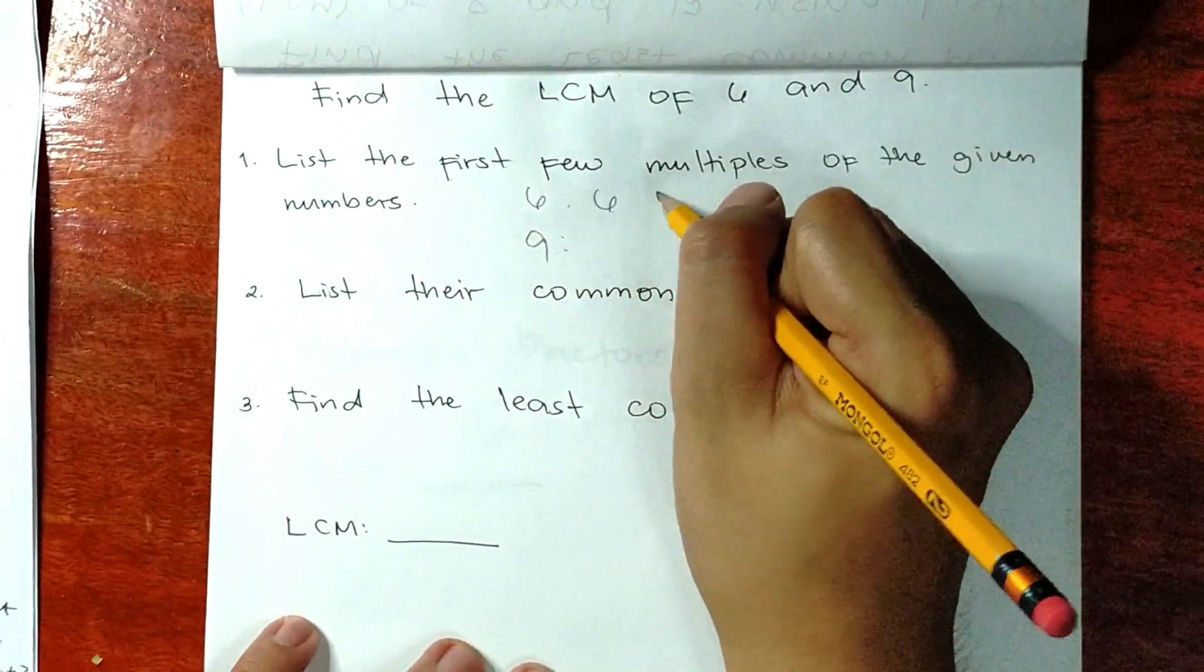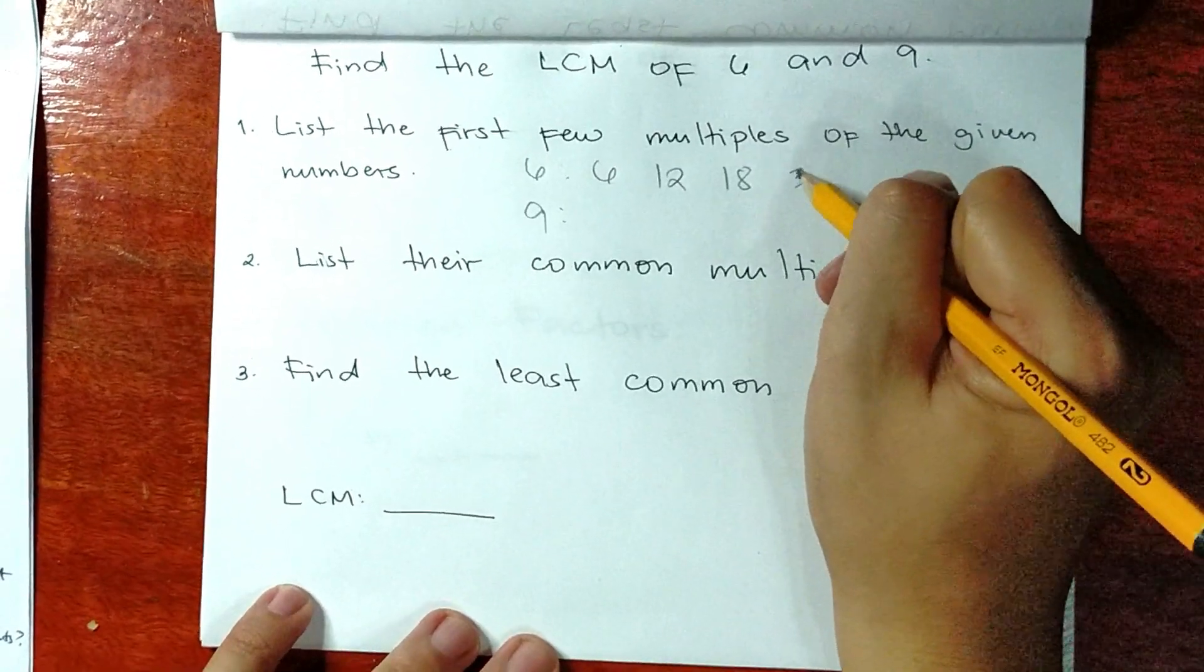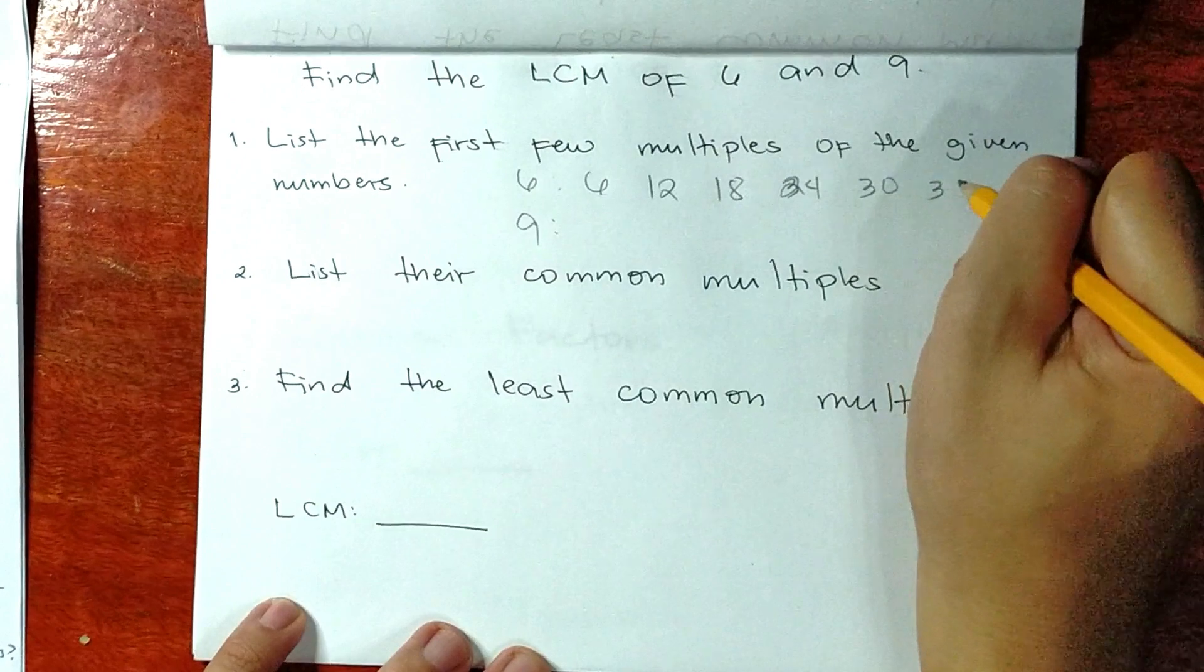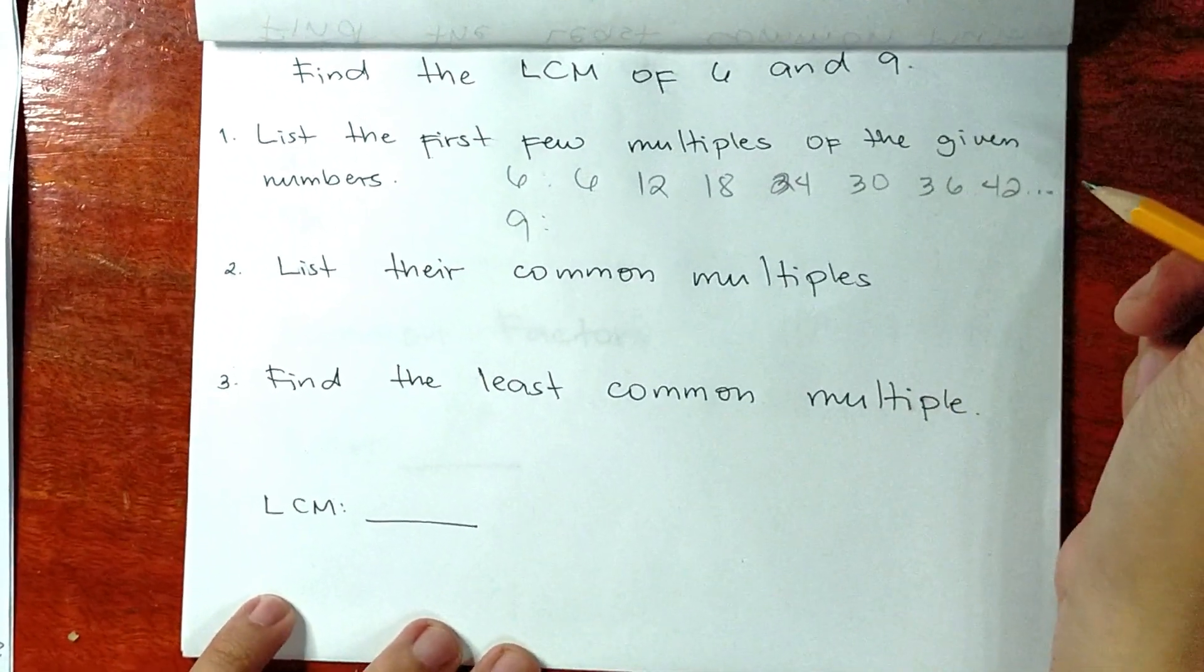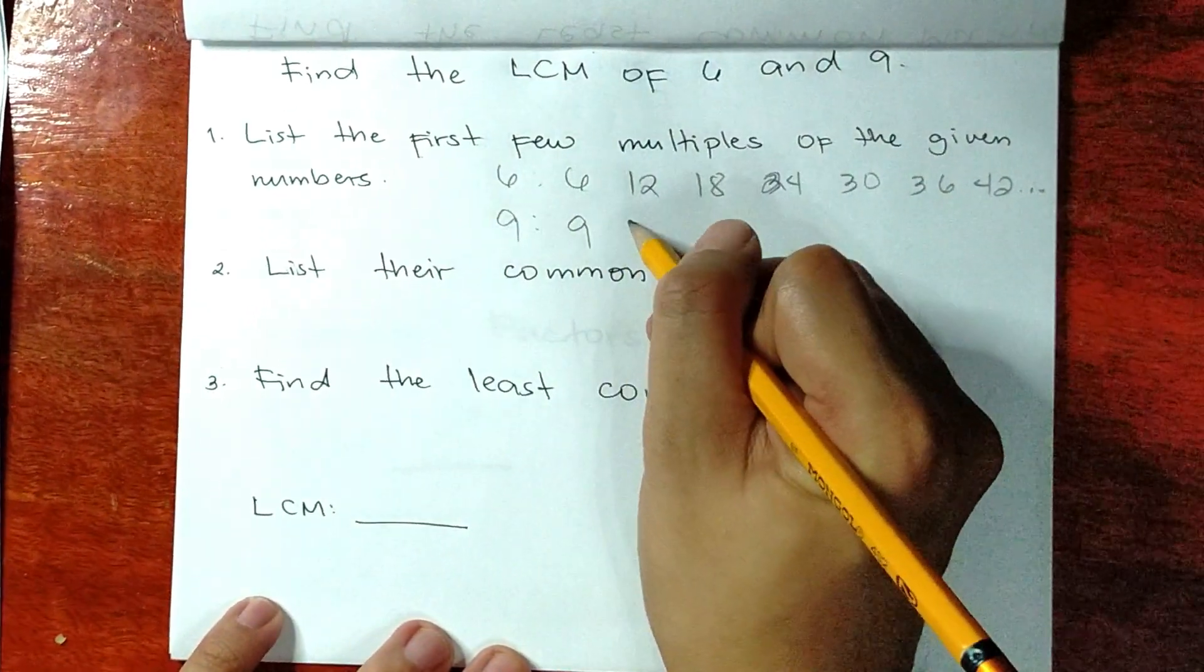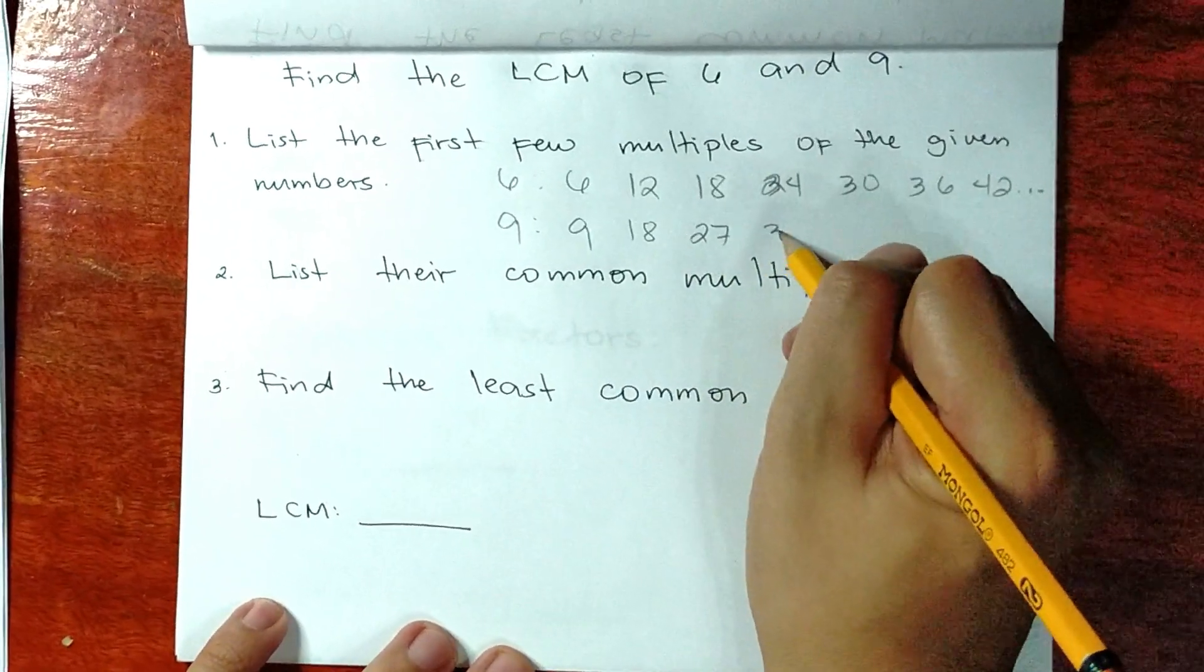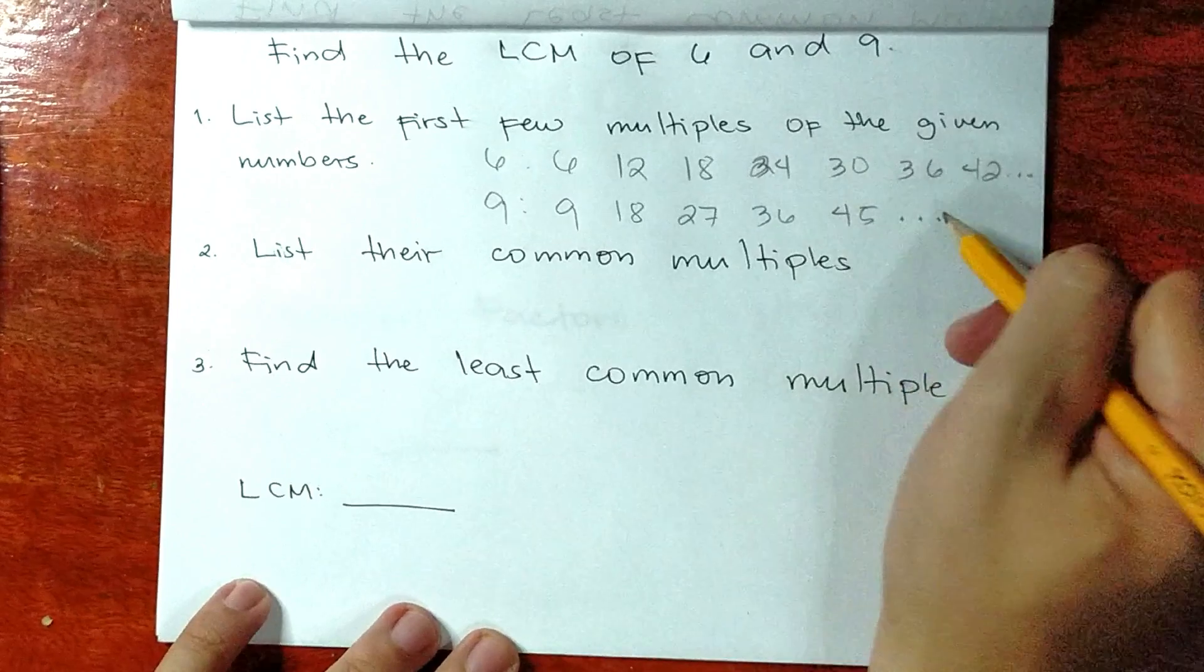6, 12, 18, 24, 30, 36, 42 and so on. Next, number 9: 9, 18, 27, 36, 45 and so on.